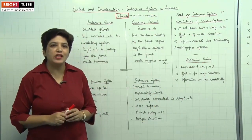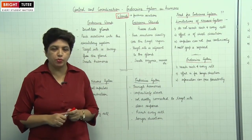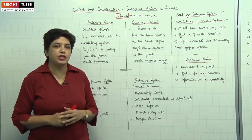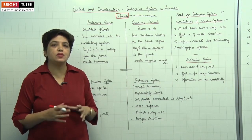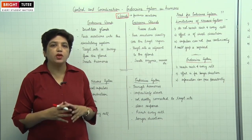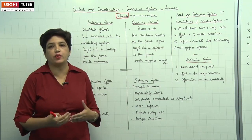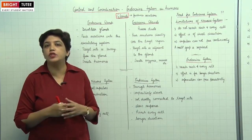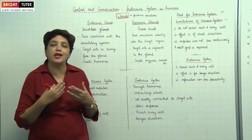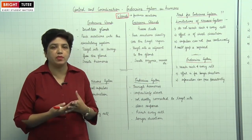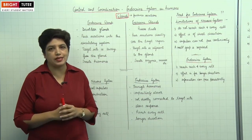In this section, we will study about the endocrine system in humans. In the last section, we studied about the nervous system in humans, which helps in control and coordination of our various activities — physical as well as physiological. In this section, we will study about another system which helps in control and coordination, that is the endocrine system.